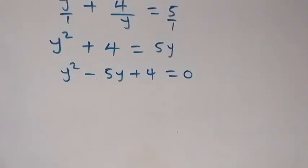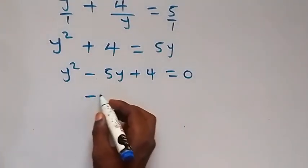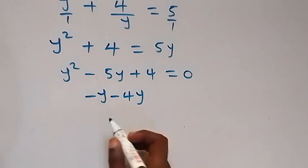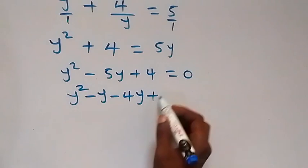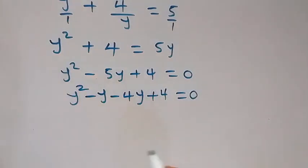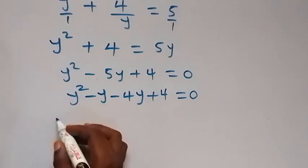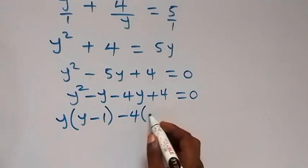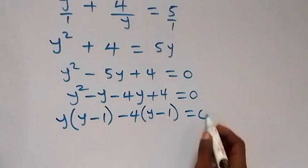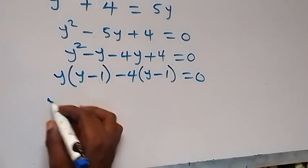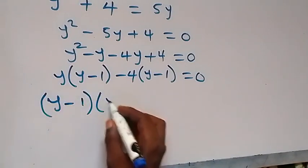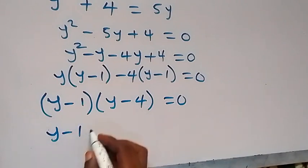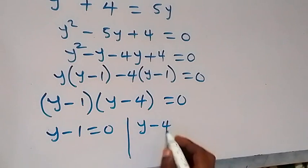This quadratic equation can be factorized. The factors of 4 that sum to give minus 5y are minus 4y and minus 1y. So we get y squared minus 4y minus y plus 4 equals 0. Grouping: y(y minus 4) minus 1(y minus 4) equals 0, giving (y minus 1)(y minus 4) equals 0. Therefore y minus 1 equals 0 or y minus 4 equals 0.